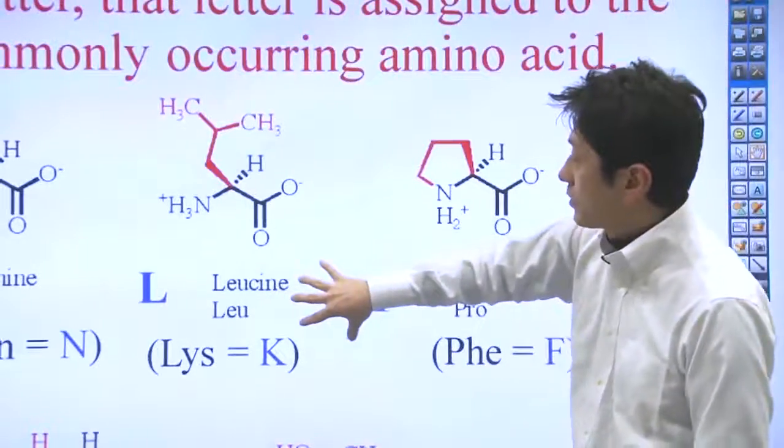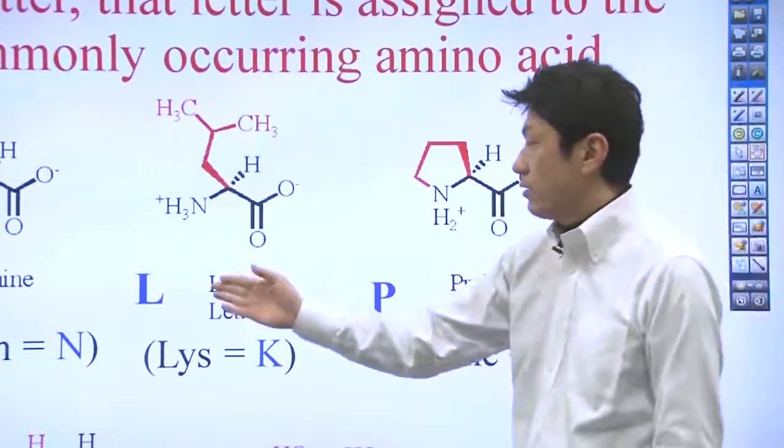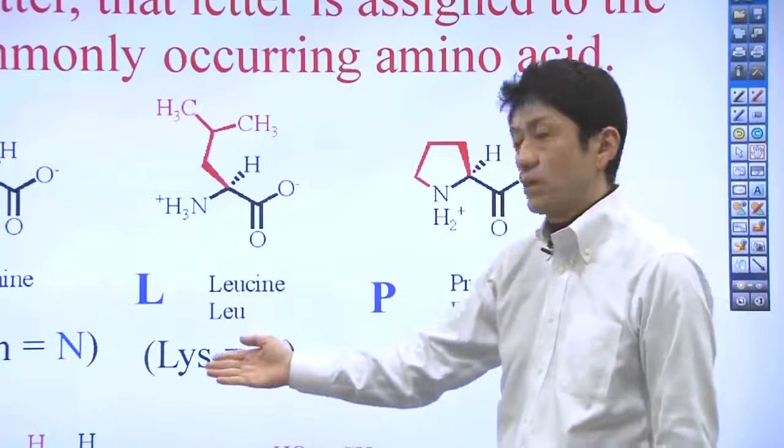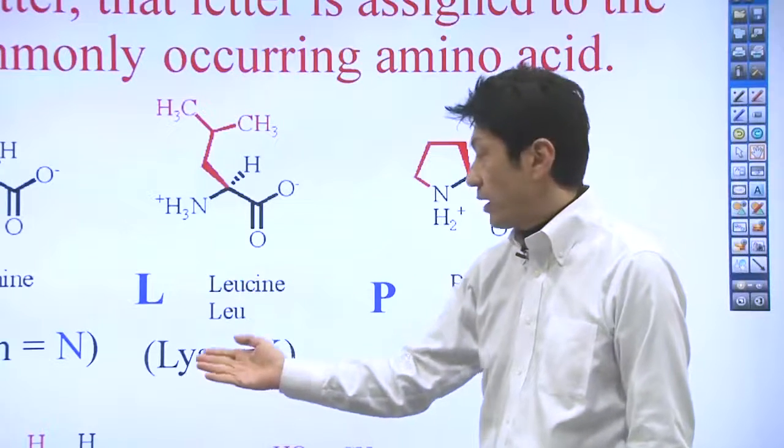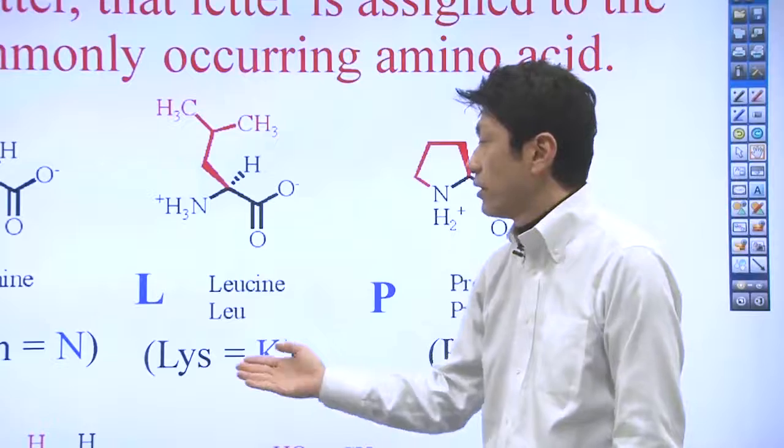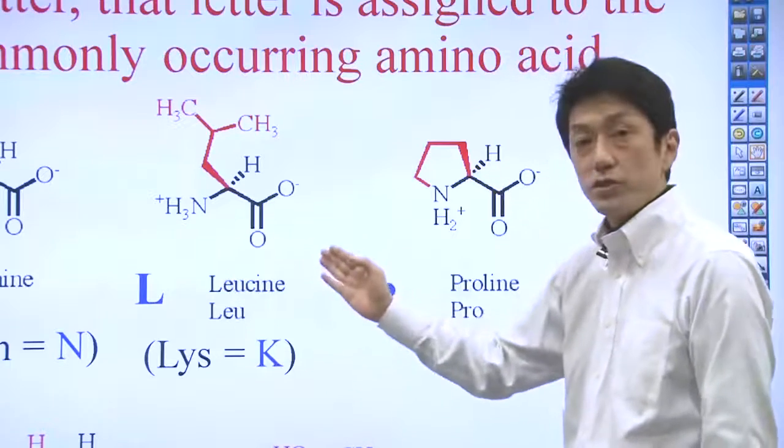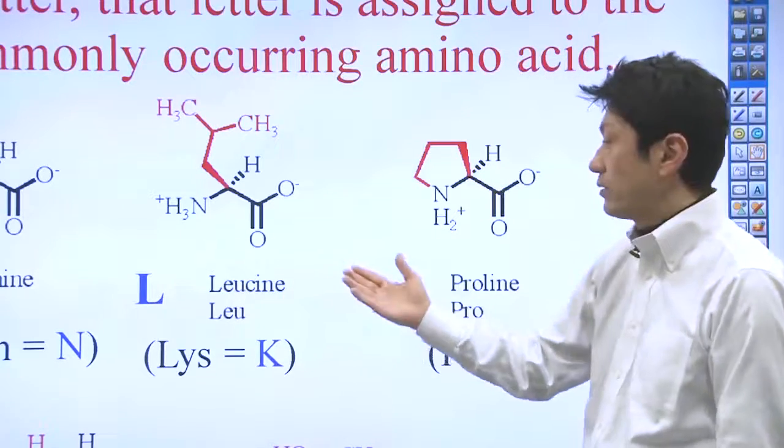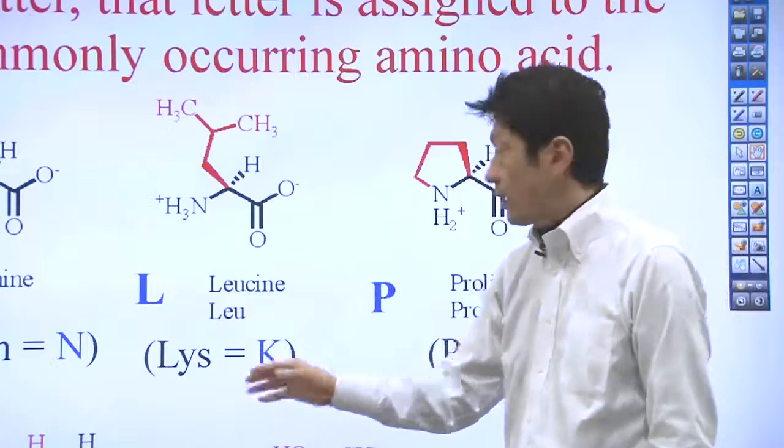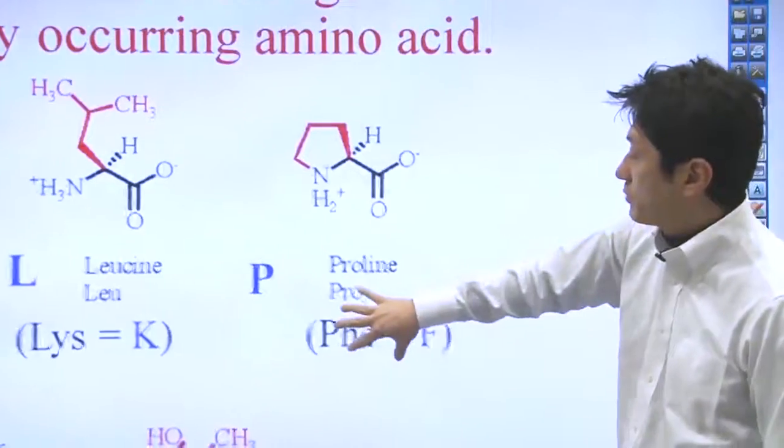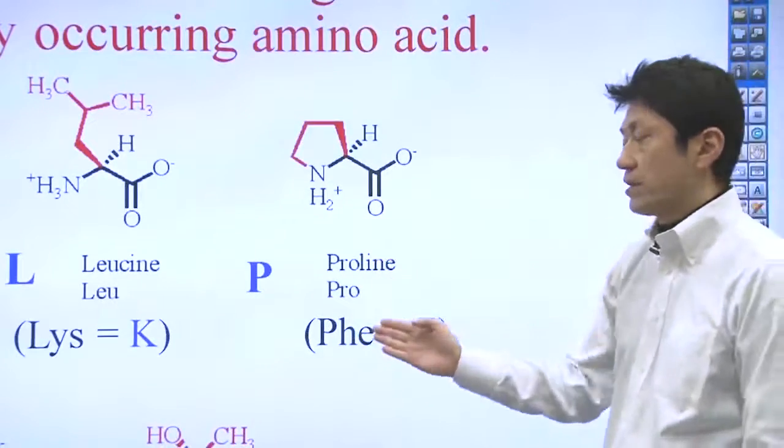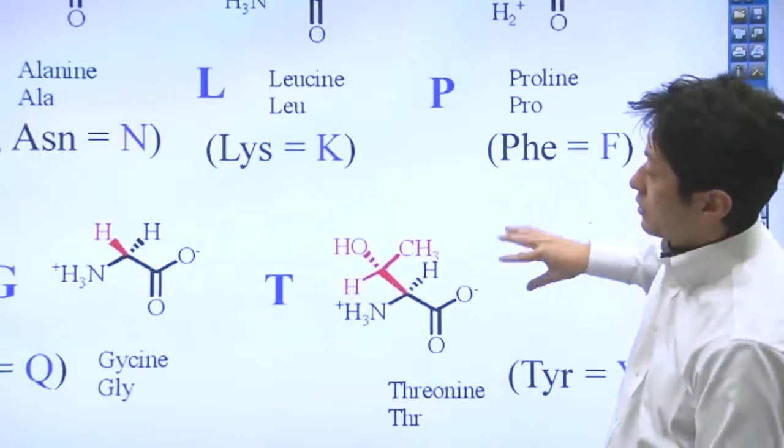Here's leucine. Leucine starts with L. That's why it's L. But lysine also starts with L. But lysine is not L. We use L for leucine because leucine is more abundant than lysine. Proline here, proline is P, but phenylalanine is F.